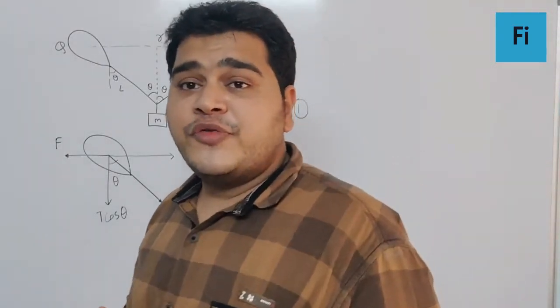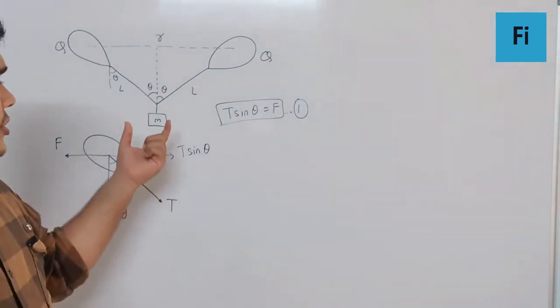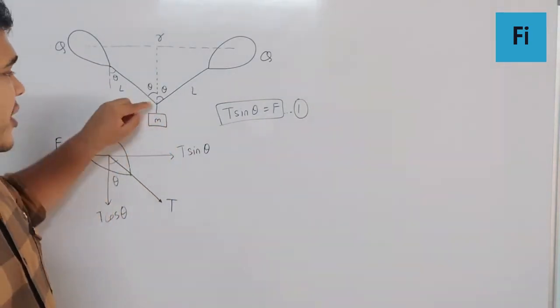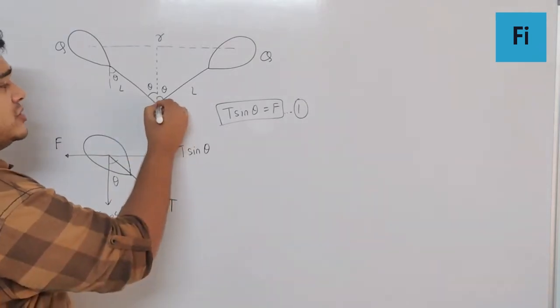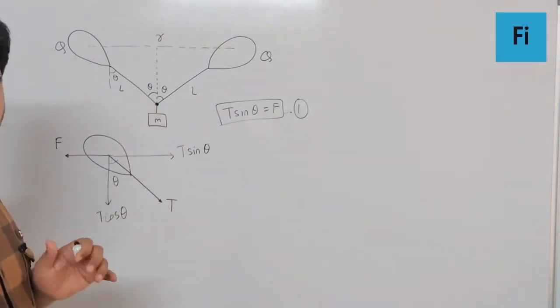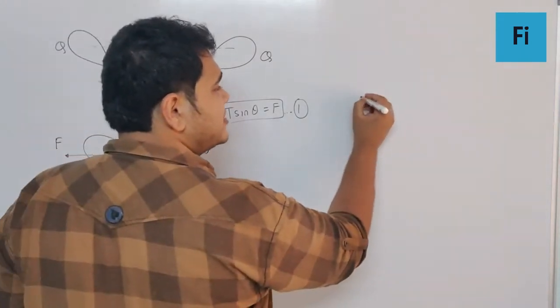If I draw free body diagram of this point which is a junction for the two balloons and the weight, the downward force is mg.